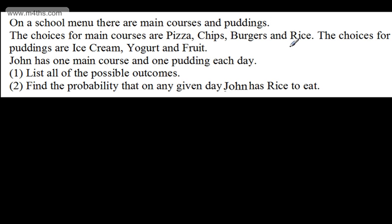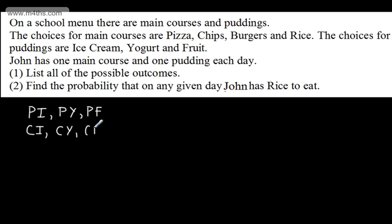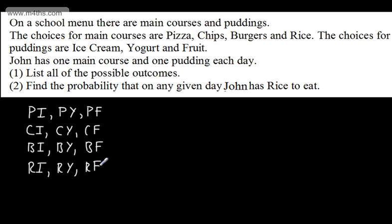We've got four main courses, so let's list all possible outcomes systematically. I'll write P for pizza, C for chips, B for burgers, R for rice, I for ice cream, Y for yoghurt, and F for fruit. The combinations are: pizza and ice cream, pizza and yoghurt, pizza and fruit; chips and ice cream, chips and yoghurt, chips and fruit; burger and ice cream, burger and yoghurt, burger and fruit; rice and ice cream, rice and yoghurt, and rice and fruit. These are all of the possible outcomes.